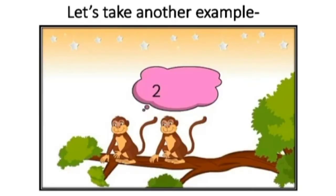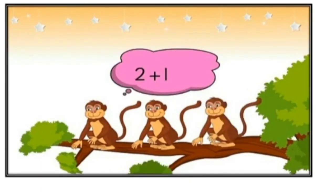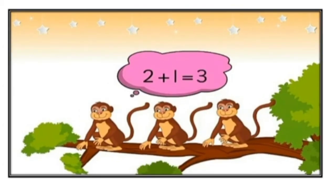Now, let us move to another example. Here you can see two monkeys are there. Now, another monkey joined with them. So, how many monkeys are there? Two plus one is equal to three. So, three monkeys are there. Am I right, children?